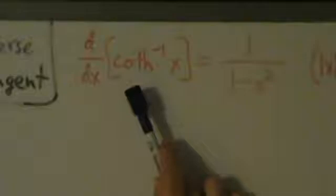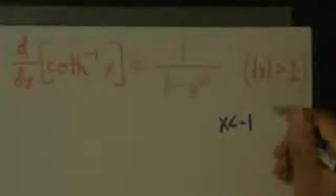The derivative: d/dx of inverse coth of x equals 1 over 1 minus x squared, which is actually the same as the derivative of the inverse hyperbolic tangent — pretty interesting. We have the restriction that the absolute value of x must be greater than 1, meaning x is less than negative 1 or x is greater than positive 1.